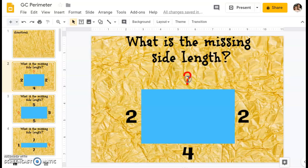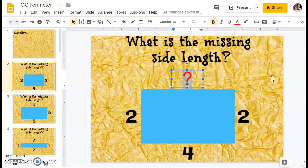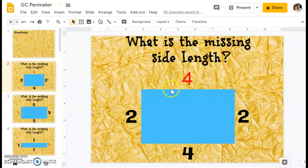So I'm going to double click my question mark so it turns blue, and then I'm going to find the 4 on my keyboard and type it in. Then that shows me that the missing side length is 4.